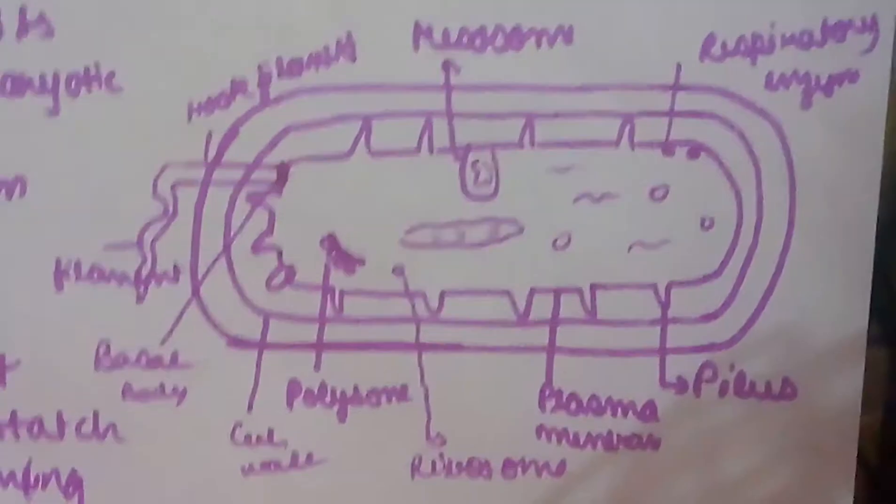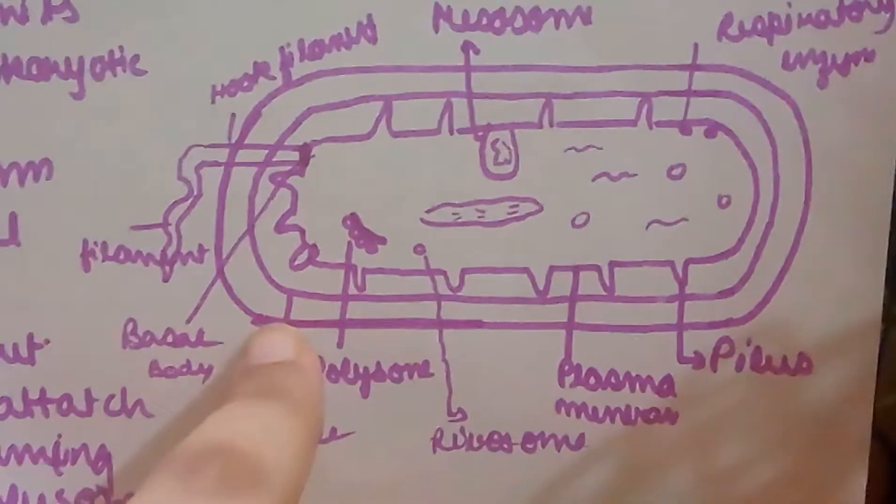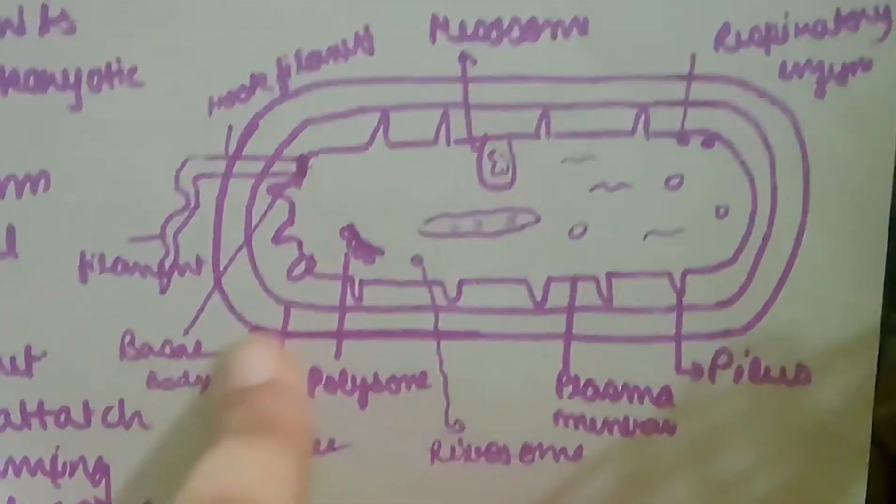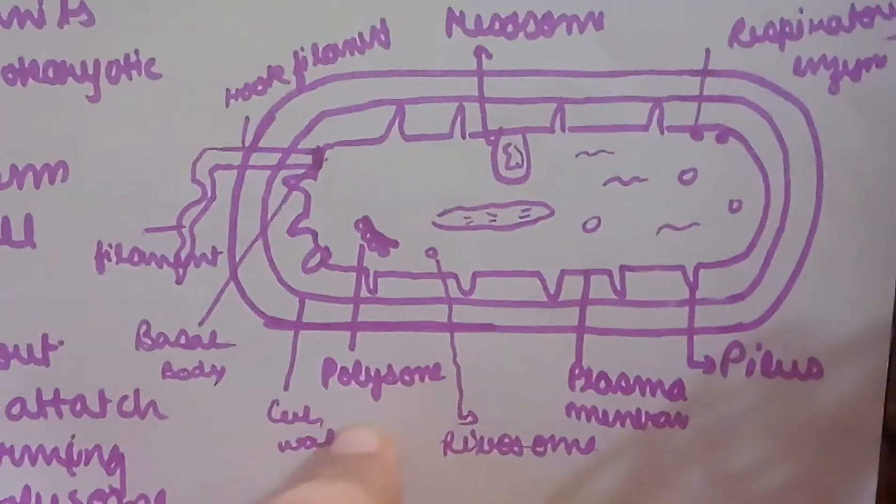We can see the cell wall, this is your cell wall. What is the outermost? We had discussed - glycocalyx is the outermost. Then we have the cell wall, polysomes.